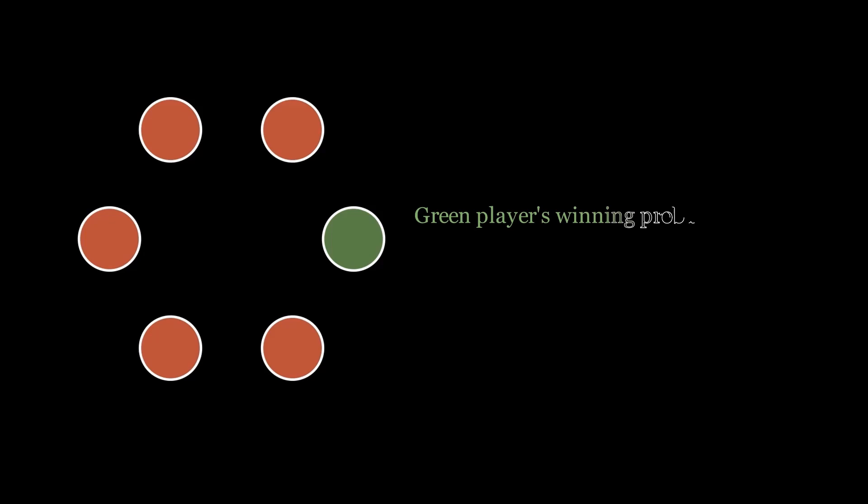Let's look at the solution. Let's call the player who has the die as the green player and the other players as red players. Let the probability that the green player wins the game be p. What is the probability that one of the red players wins the game? It is 1 minus p over 5 due to symmetry.